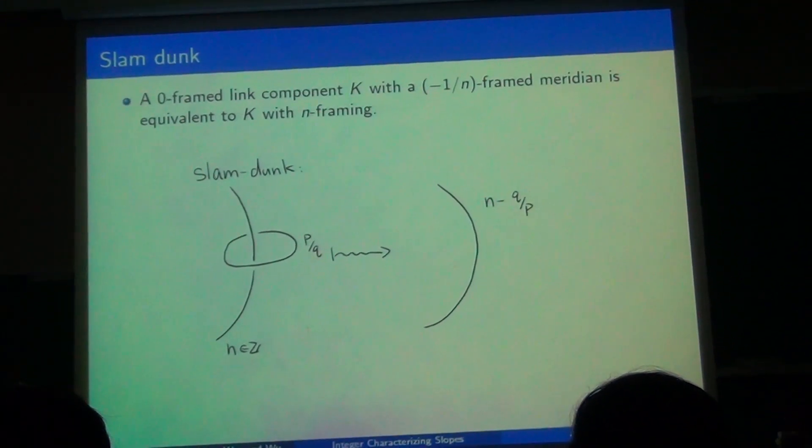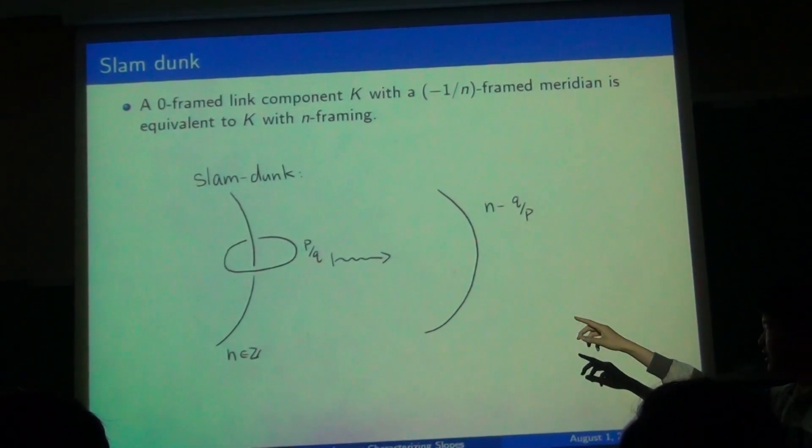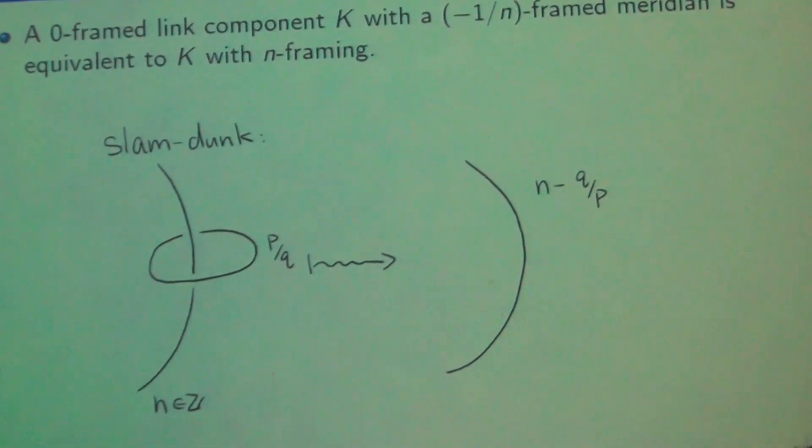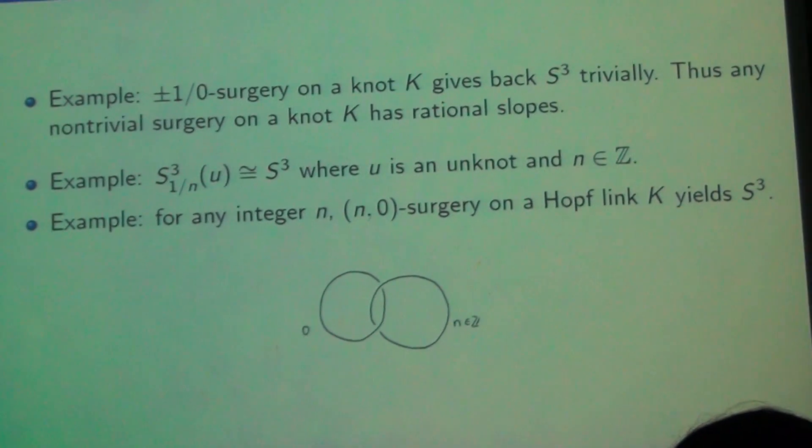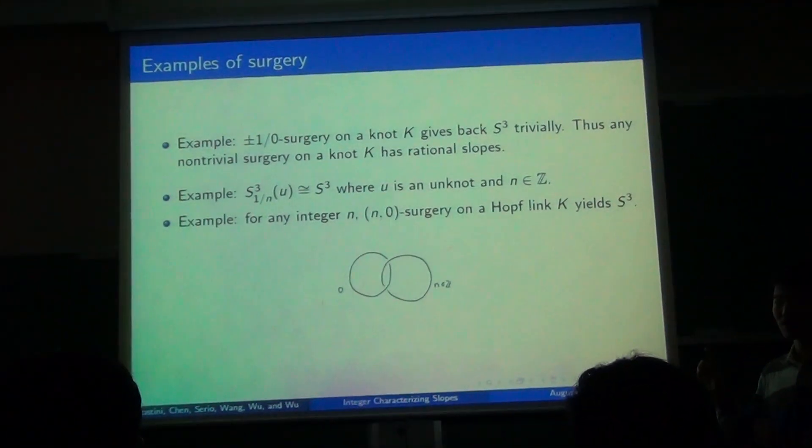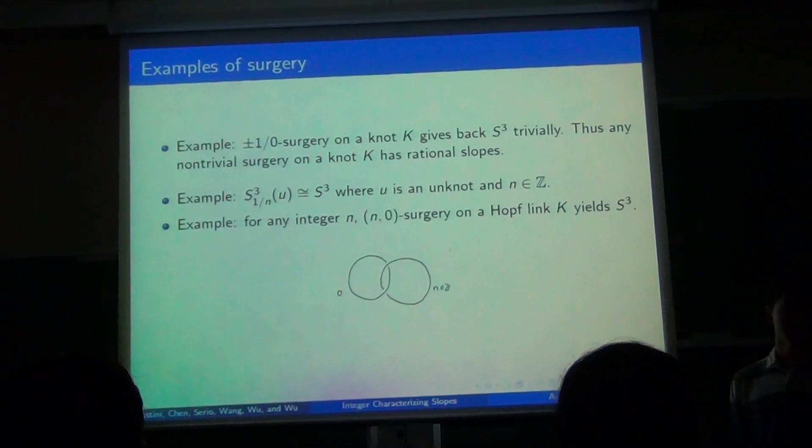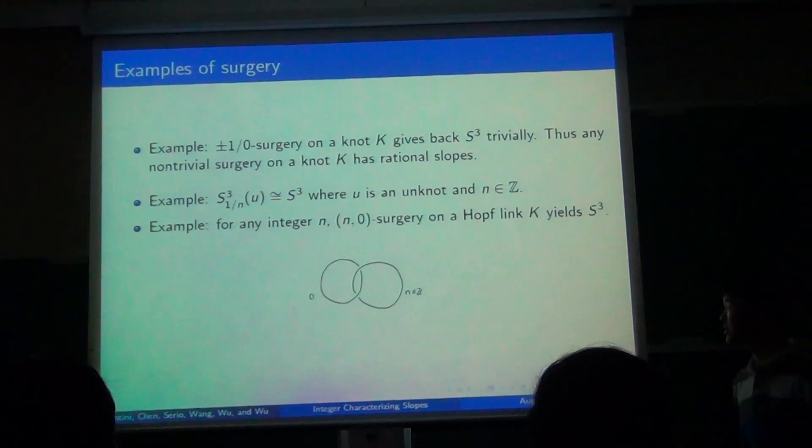And you can replace negative one framed unknot with a twist of the strands that pass through. And this is the slam dunk. You take any zero-framed unknot, and you can remove it from the diagram. And one consequence is that if you have a minus one framed unknot on a zero-framed knot, then you can replace that with that knot, but with n framing.